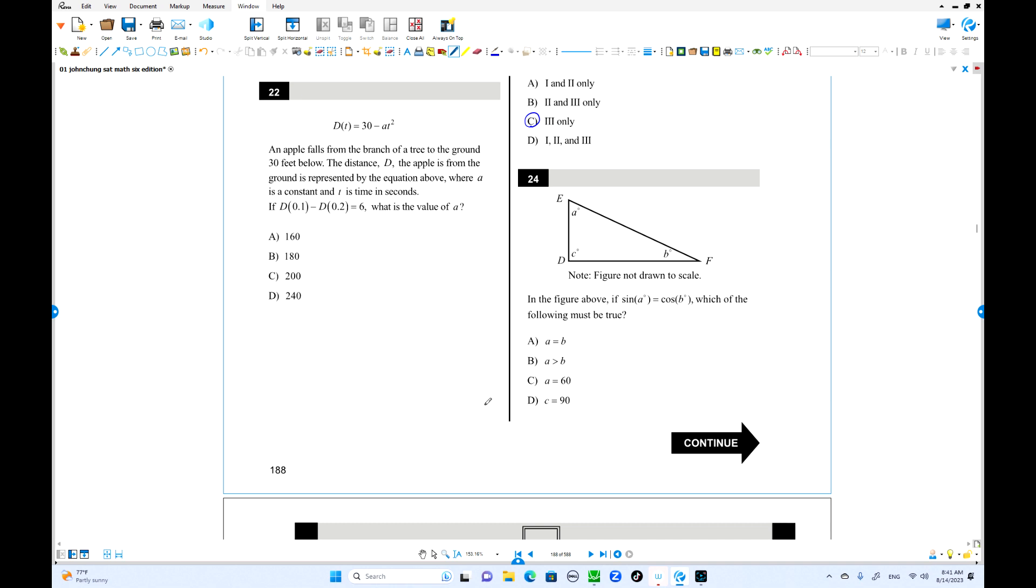Problem 24: sine A equals cosine B. That's a co-function, so we know A plus B equals 90. From here we can see angle C is also 90, but A and B are not always equal. Sometimes if A is 10, B can be 80. Choice D must be true.